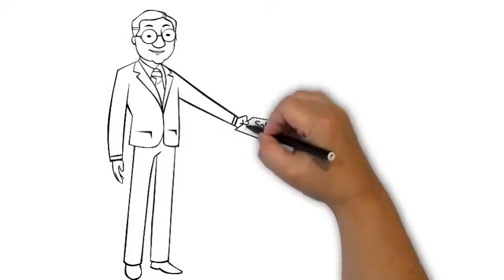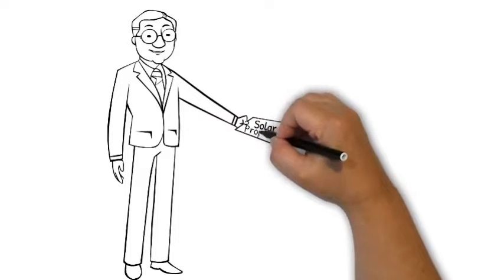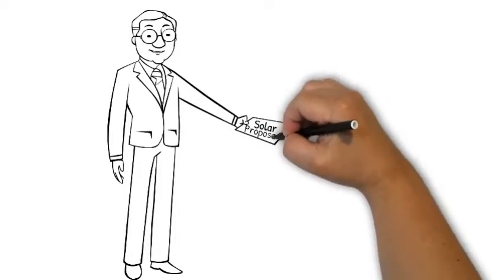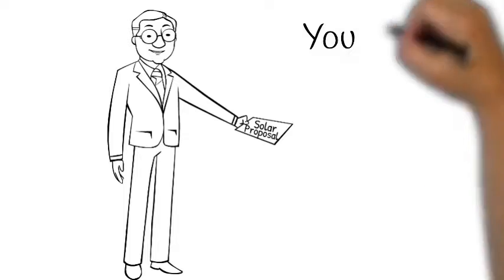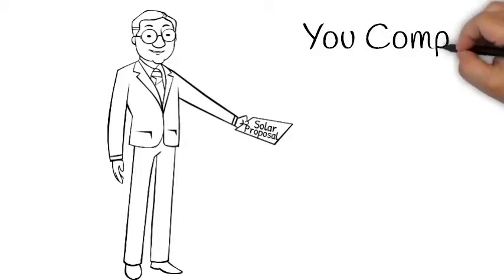By using Compare All Solar for getting solar estimates, you can save 20% to 40% on the cost of going solar as compared to California average.